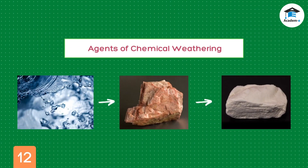The most common causes of chemical weathering are water, air, and acids. As water dissolves the minerals, rocks may either change composition or fall apart. For example, when the mineral feldspar is combined with water, it changes into a clay material called kaolinite.